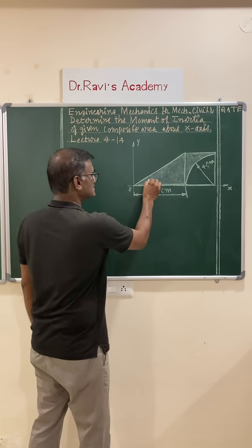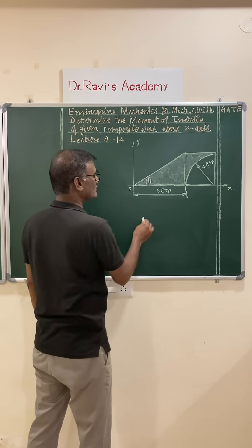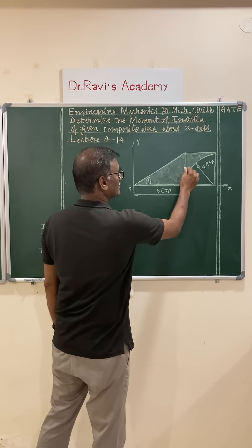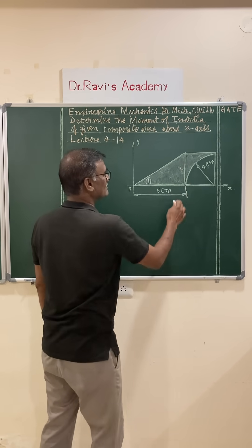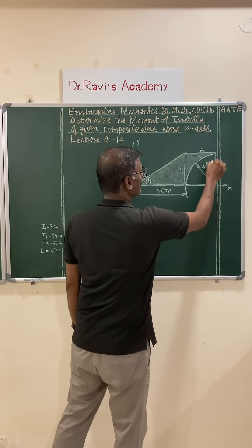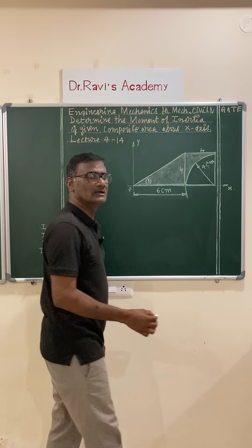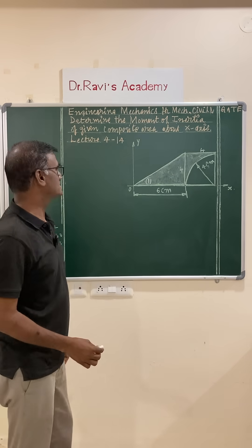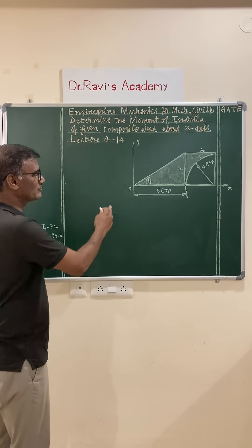Let us consider right angle triangle is 1 with base 6 centimeters and height 4 centimeters and square of 4 by 4 and a quarter circular area of 4 centimeters. So, this you can calculate about x-axis.